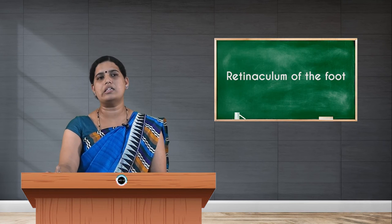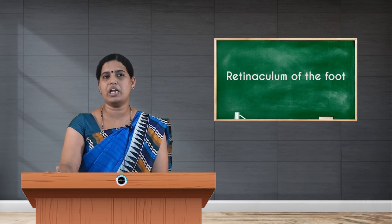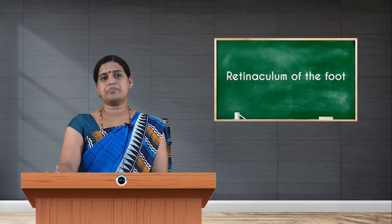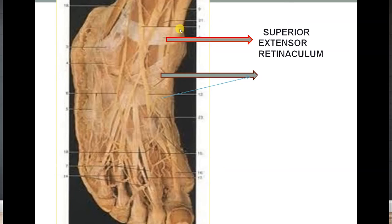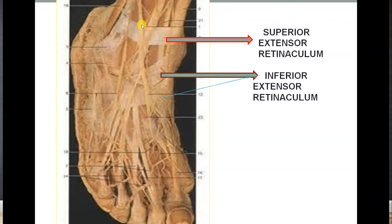You can see how the long tendons from the anterior compartment pass beneath the extensor retinaculum. This modification of deep fascia acts like a tightening band, preventing the tendons from bow stringing. The superficial peroneal nerve — the nerve of the lateral compartment of the leg — passes superficially over this extensor retinaculum after supplying peroneus longus and brevis, providing cutaneous innervation to the dorsum of the foot.